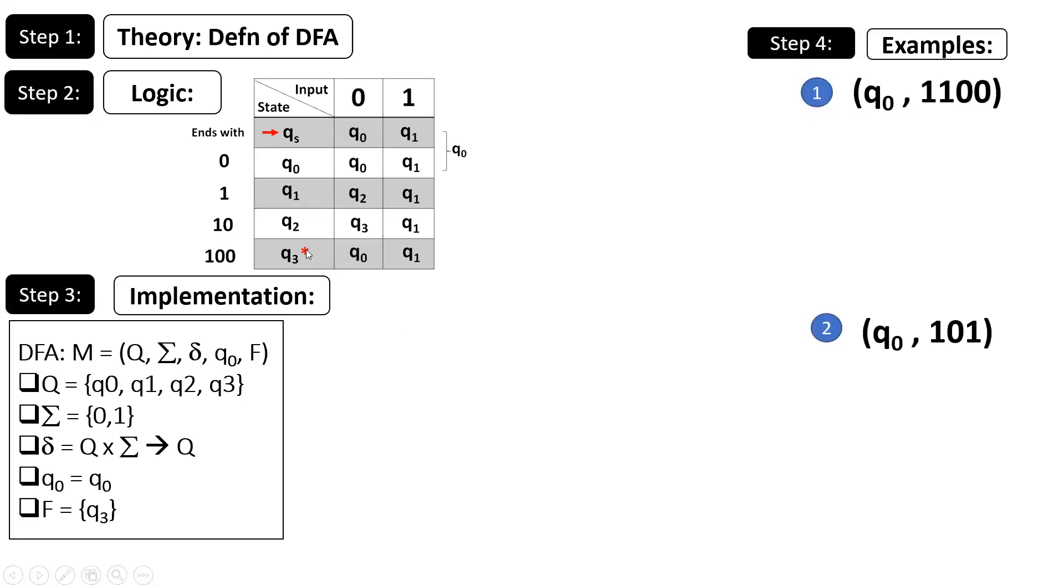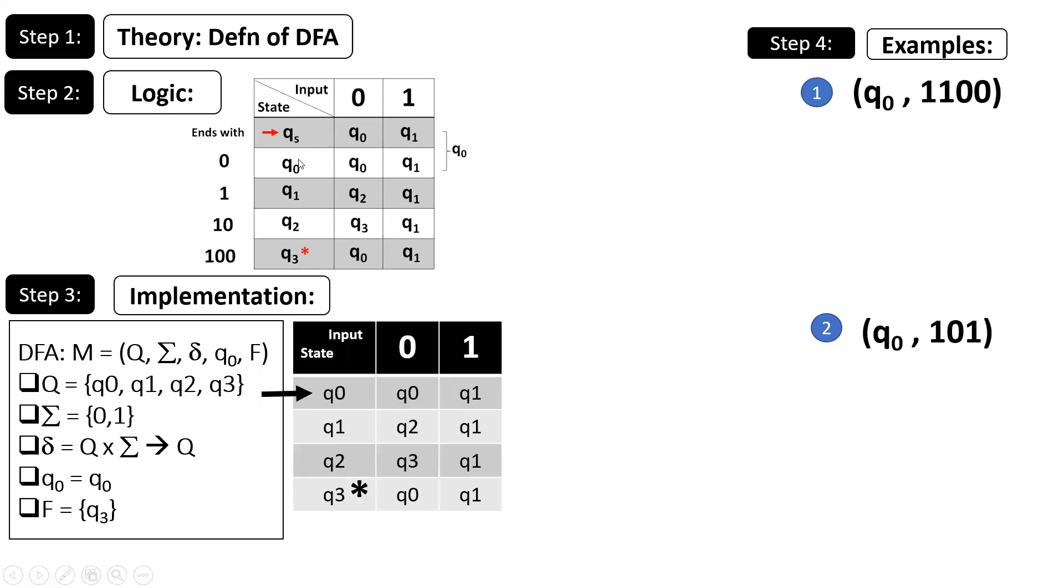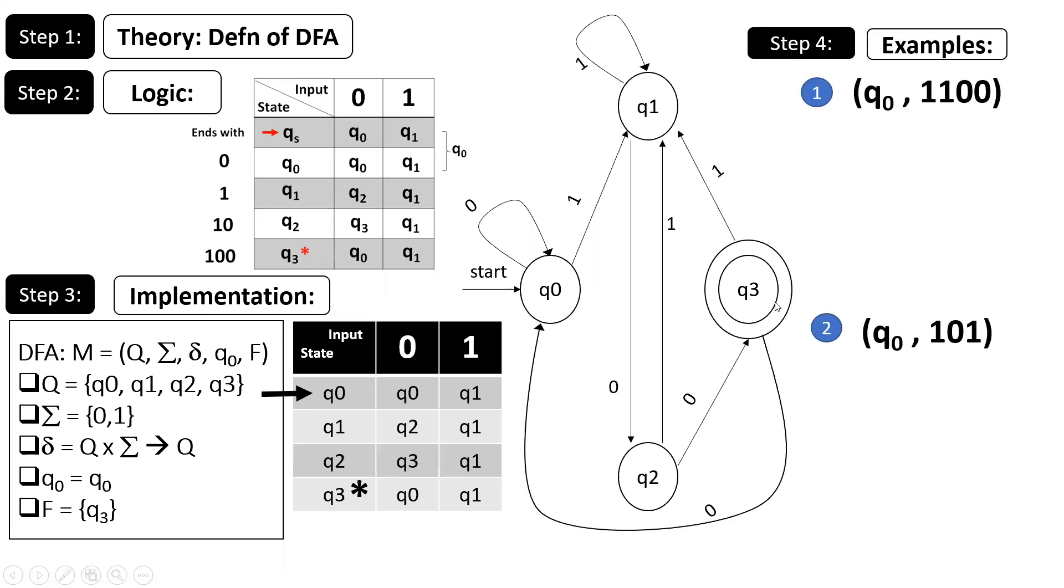Step 3 is the implementation. Q0, q1, q2, q3. Q0 on 0 is q0, q0 on 1 is q1. Q1 on 0 is q2, q1 on 1 is q1. Q2 on 0 is q3, q2 on 1 is q1. Q3 on 0 is q0, q3 on 1 is q1.